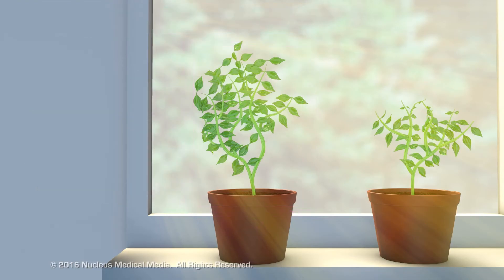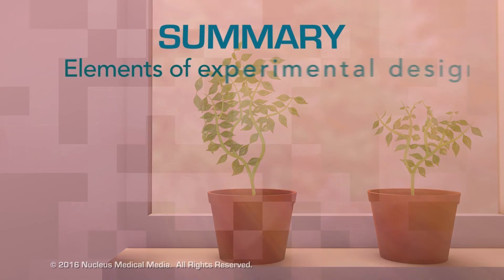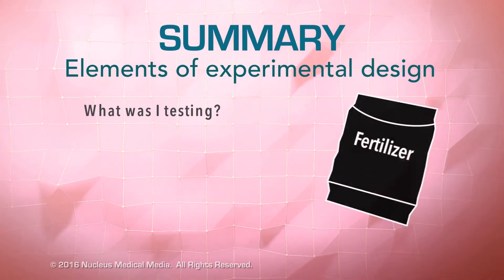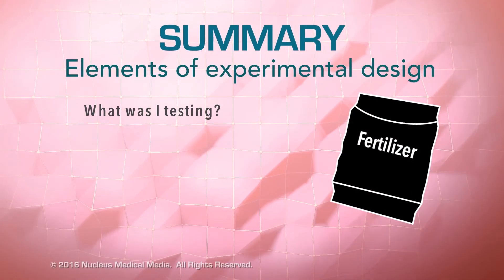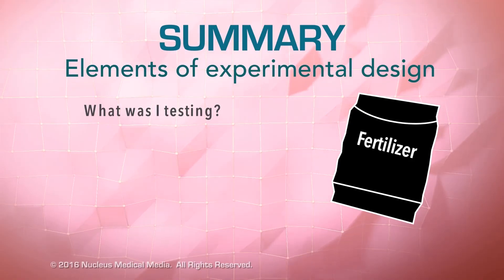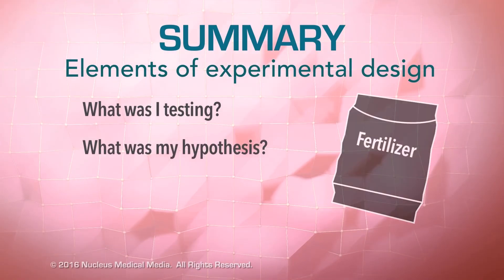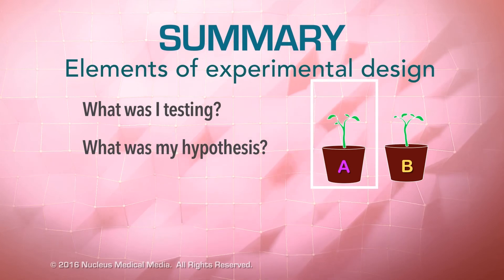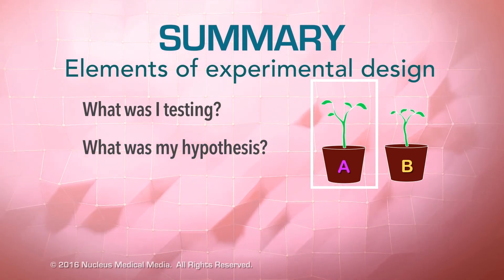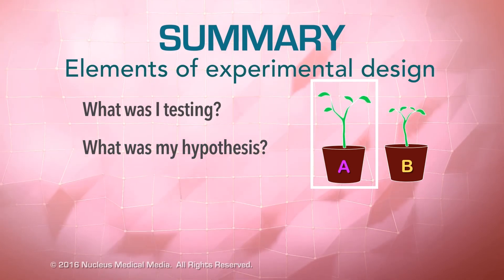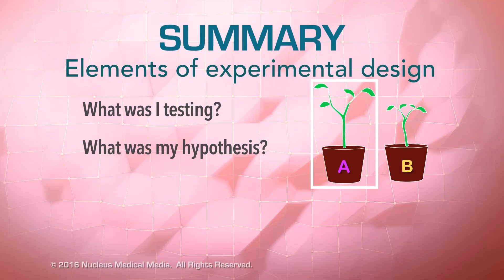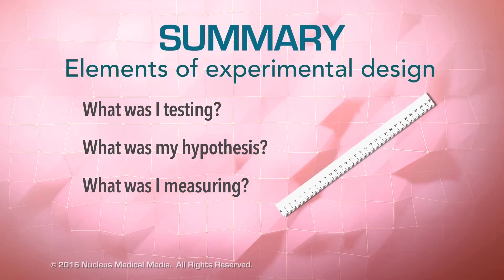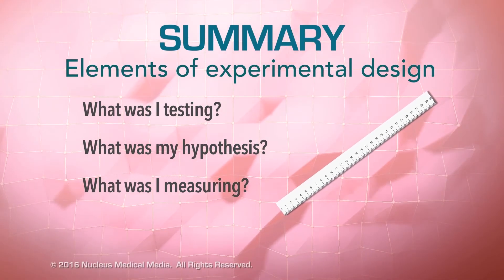Let's recap the elements of experimental design. What were you testing? You were testing to see whether or not fertilizer promotes plant growth. What was your hypothesis? The hypothesis was that the plant that got fertilizer would get bigger than the plant that didn't get fertilizer. What were you measuring? You measured the growth of both plants.